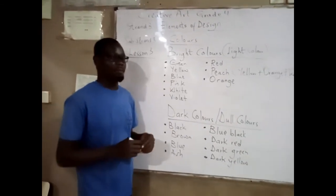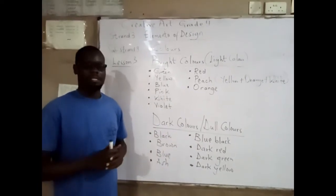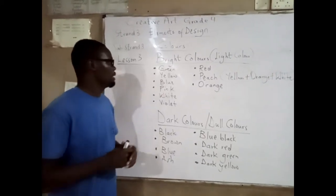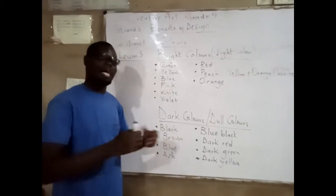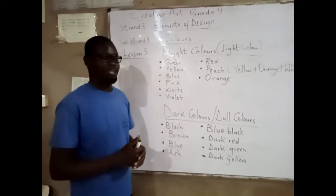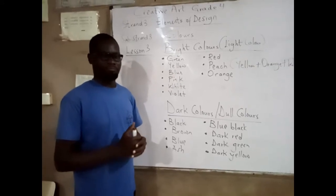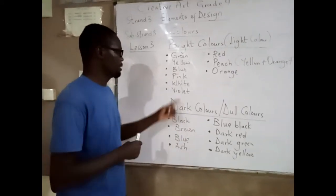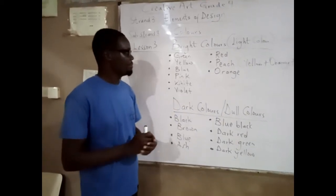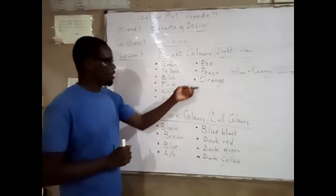Let's look at examples of bright colors. We have green — most people paint green, and one of your classrooms is painted green. Then yellow — most of you are wearing yellow. Blue. Pink — the question is, which people like pink? You know them. Now white. Violet. Red. Peach. Orange.